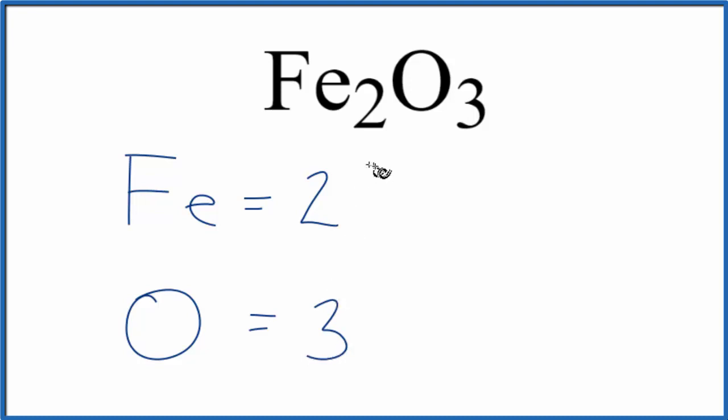And if we wanted to know the total number of atoms in Fe2O3, we just add these up, 3 plus 2, that gives us 5. So there are 5 atoms in iron 3 oxide.